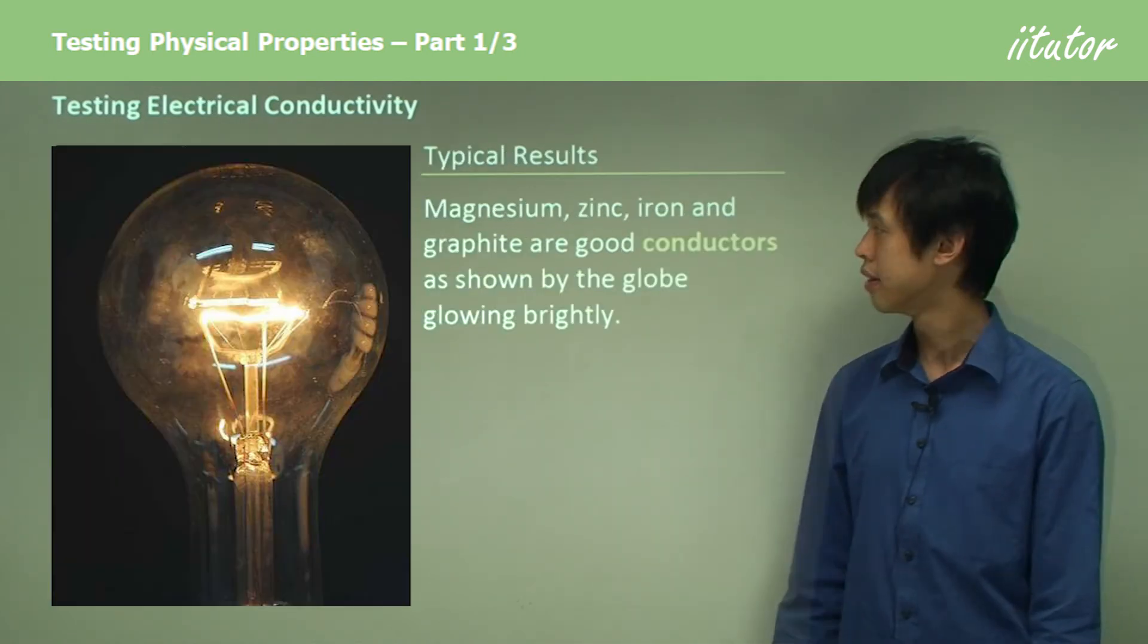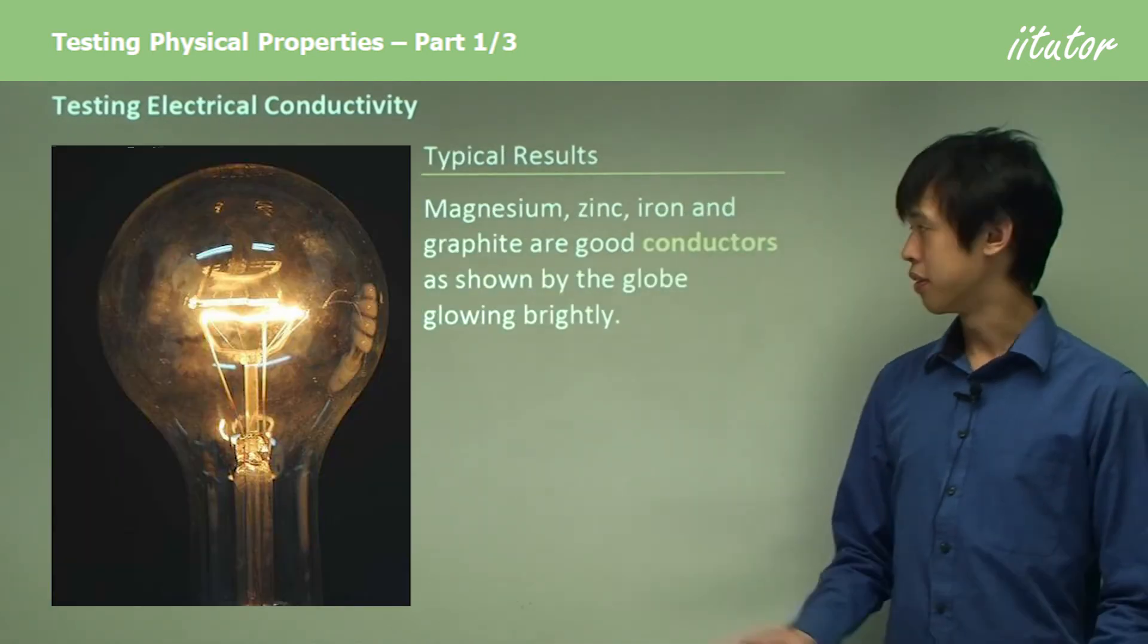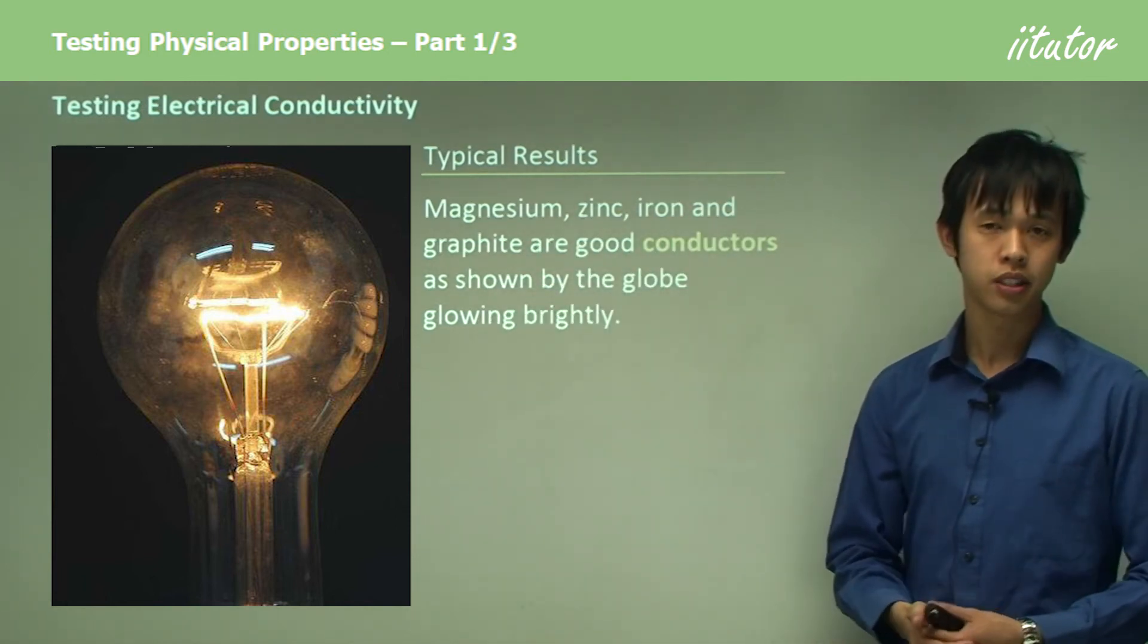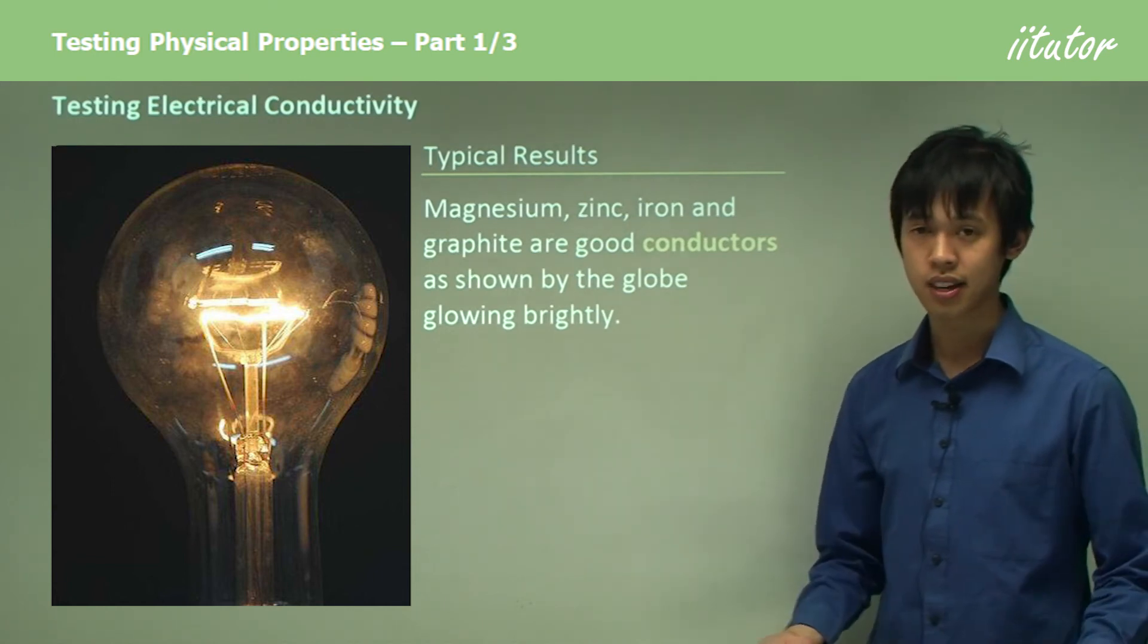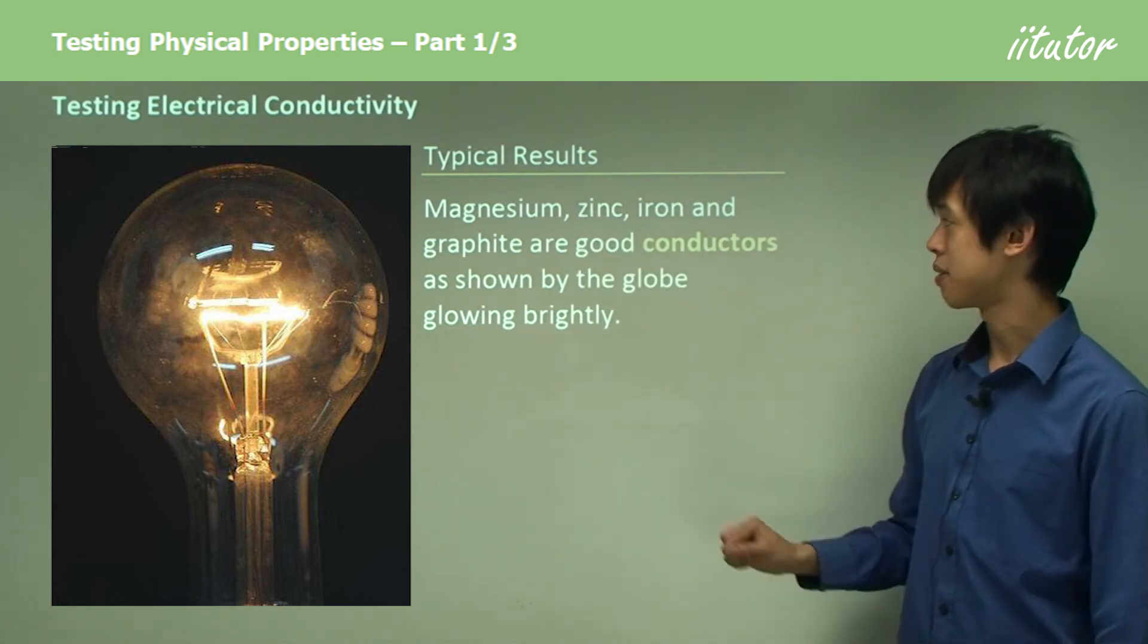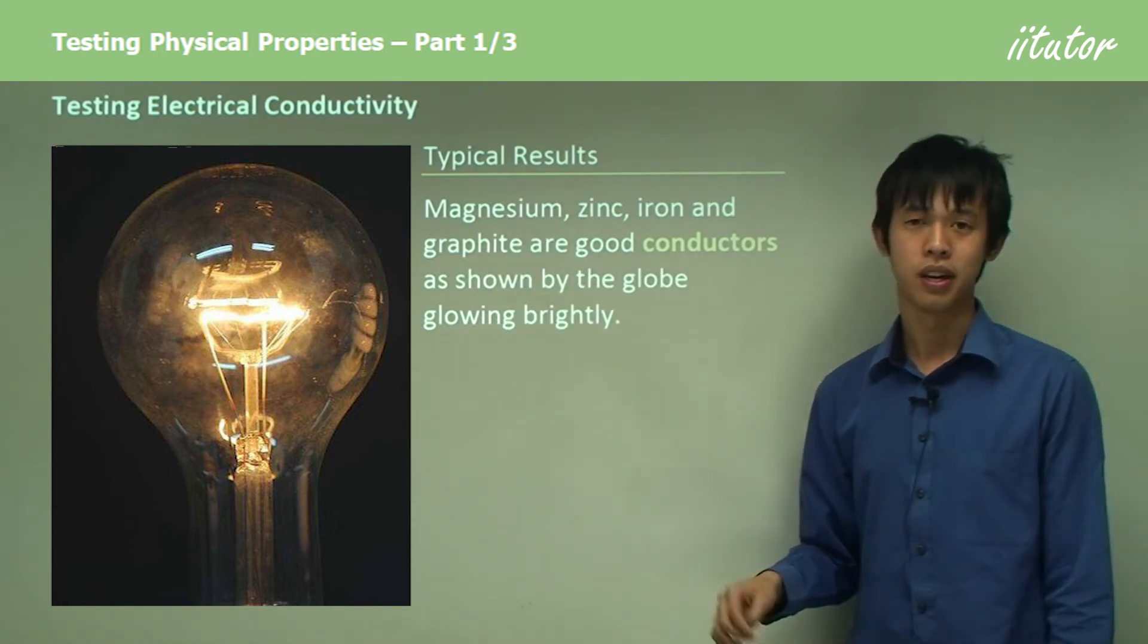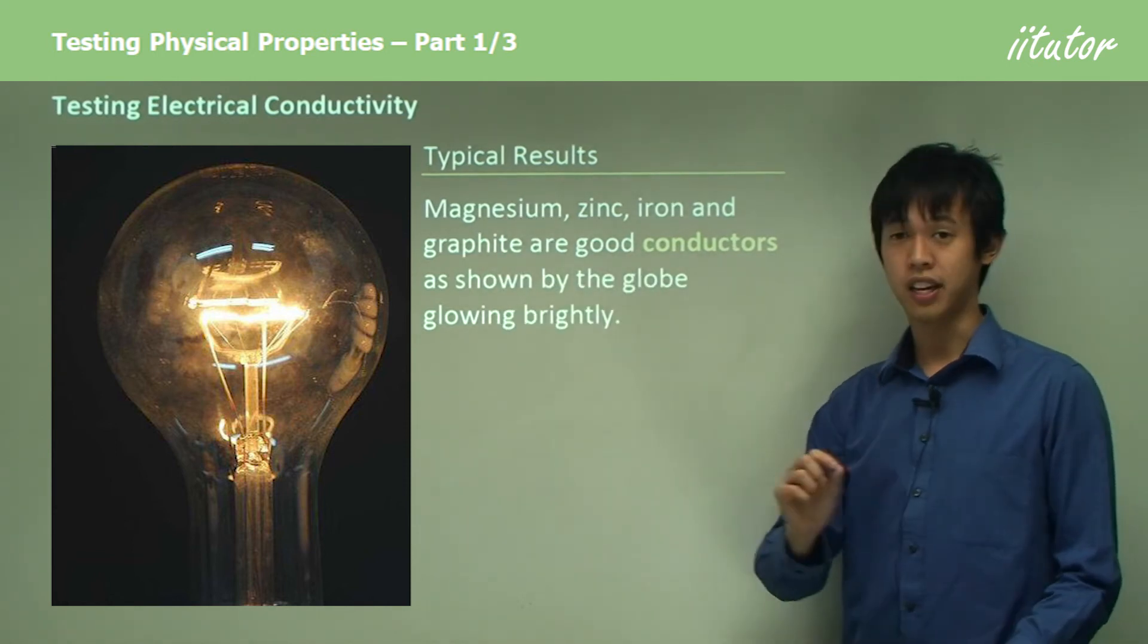Your typical results would be that the magnesium, zinc, iron, and graphite are all good conductors. The ammeter will tell you which one's the best conductor. If I was to guess, probably either magnesium or graphite.